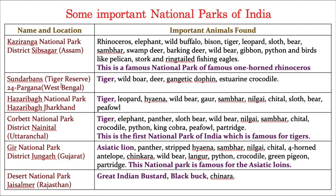Sundarban in West Bengal is famous for tigers - it is a tiger reservoir. Hazaribagh National Park also has tigers. Corbett National Park is very important to remember - it is the first Indian National Park, and it is very famous for tigers. Gir National Park in Gujarat is best known for taking care of lions. Desert National Park is famous for blackbuck.